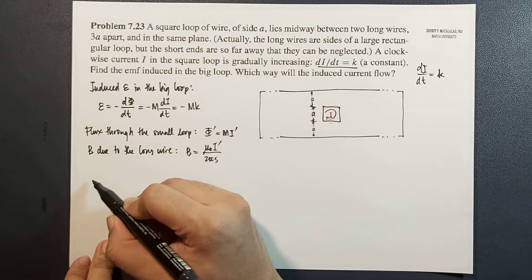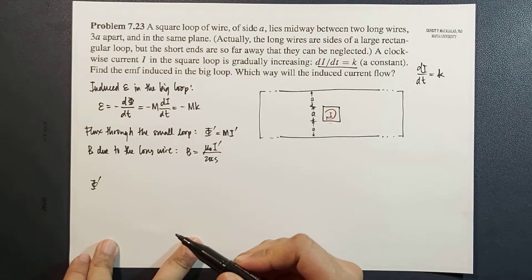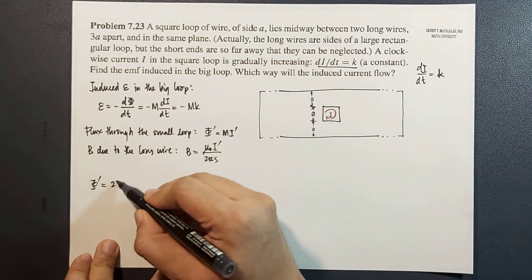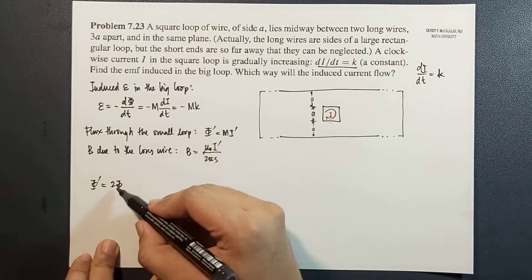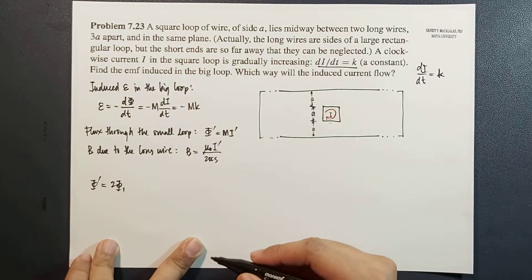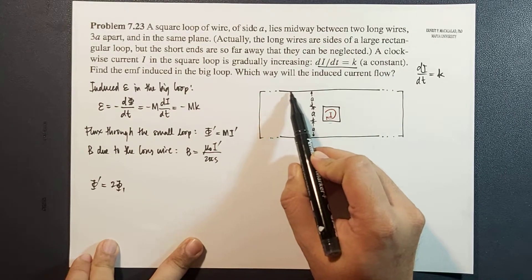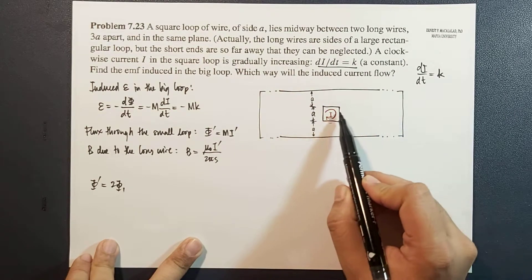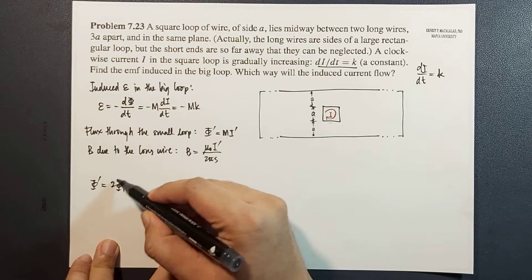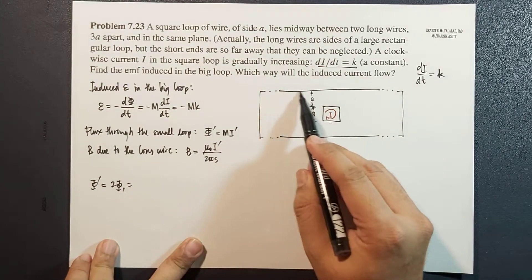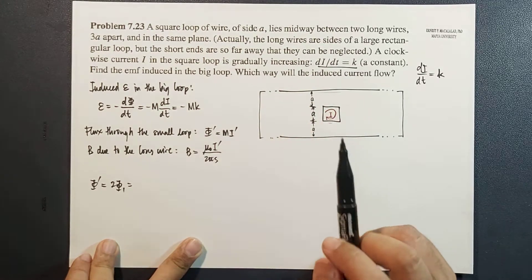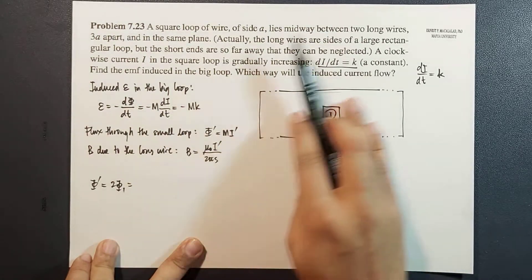Therefore, the total flux through the small loop is given by 2 times the flux through the loop due to one of the wires, because the flux provided by this on the square loop is the same as the flux provided by this. That's why we can add them together. Also, the magnetic field is the same and they're pointing in the same direction, along the axis perpendicular to this plane.